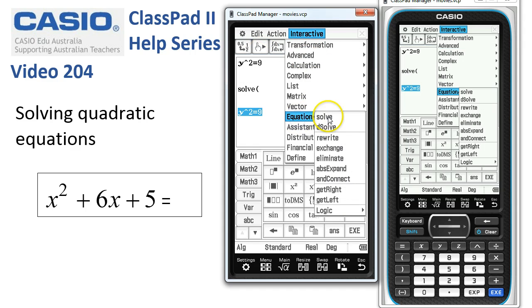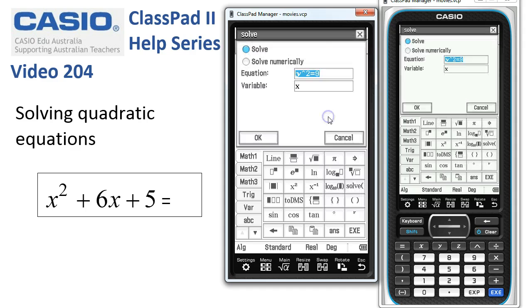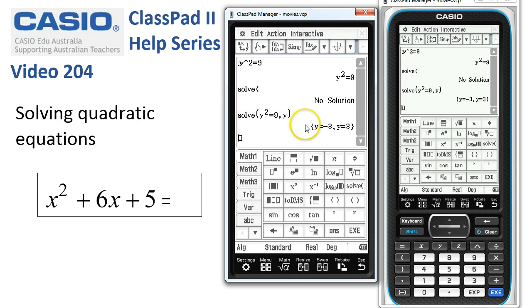We could go down to Equation Solve. They're identical. This time, though, the variable that we want to solve for is not x, so we'll change that to a y and tap OK. Classpad now gives us the solutions we were expecting of positive and negative 3.